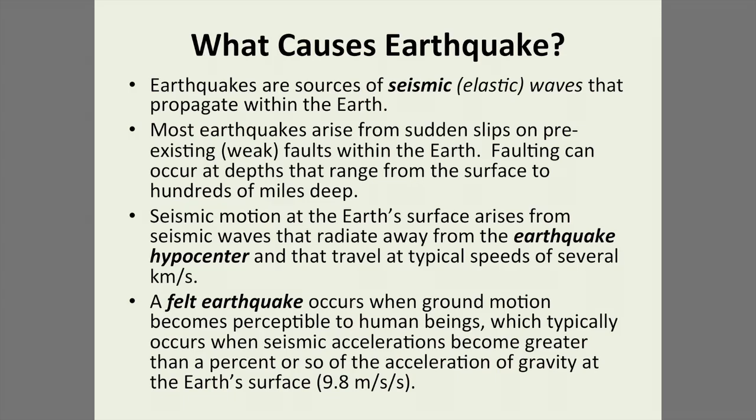Earthquakes are sources of elastic or seismic waves that propagate within the Earth. They're a bit like sound waves traveling through solid media. Most earthquakes arise due to slip on a predisposed weak zone, which is typically a fault within the Earth. Earthquakes can start anywhere from very close to the surface to hundreds of miles deep on our planet. The seismic motion that we perceive at the surface of the Earth arises from seismic waves radiating away from the source, or the hypocenter, as we call it.